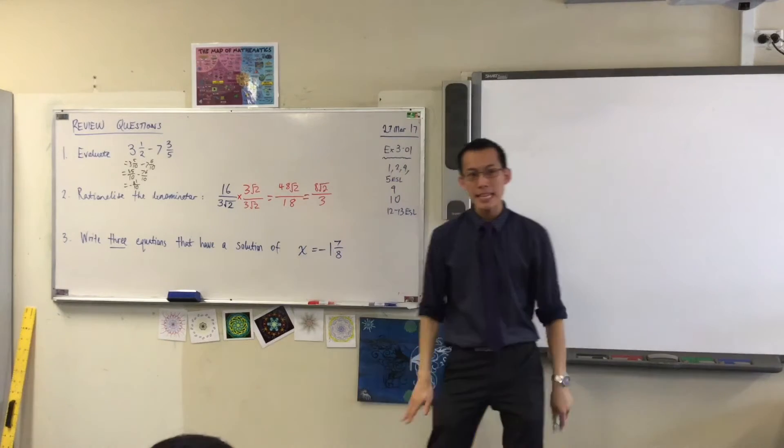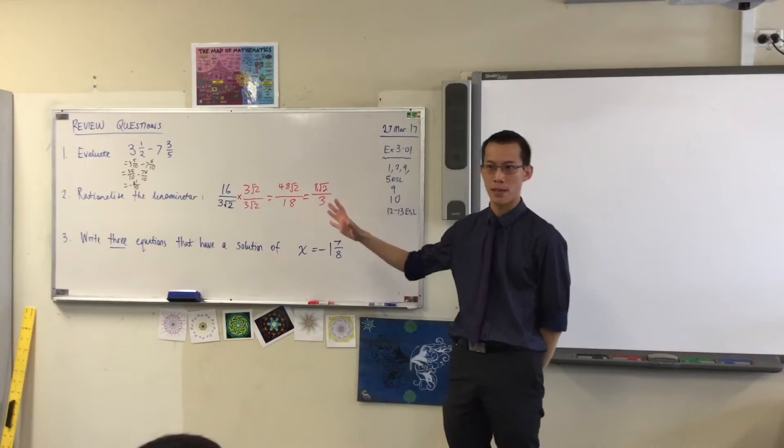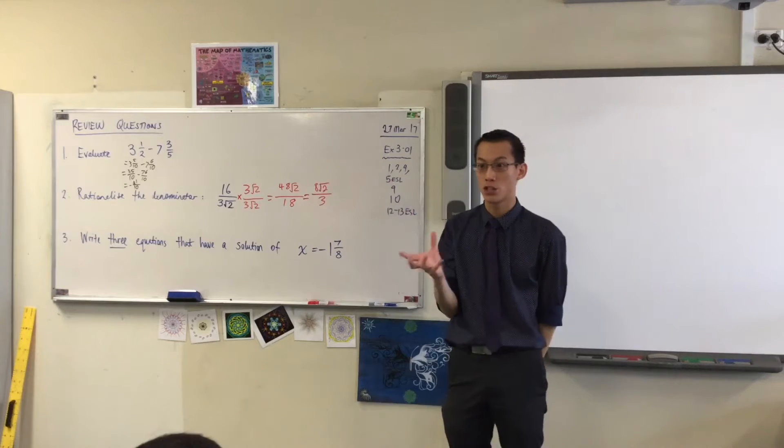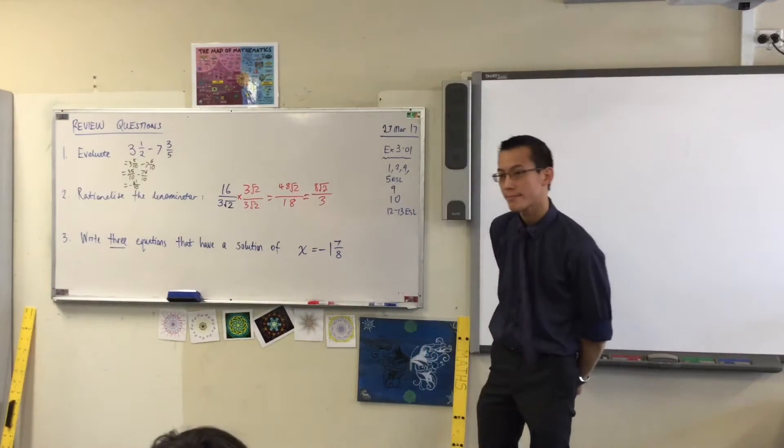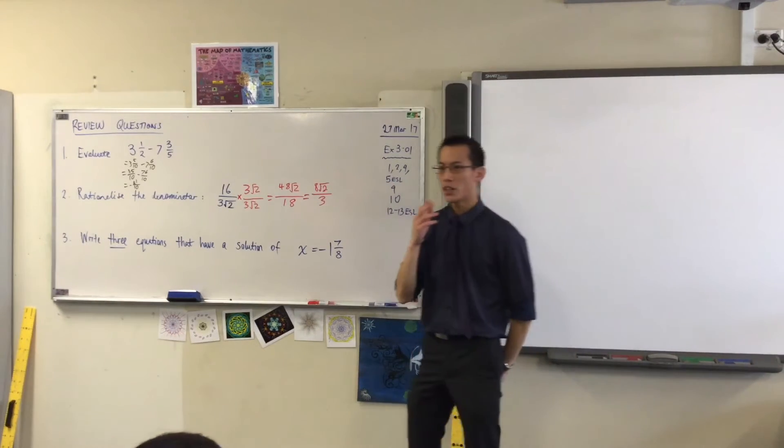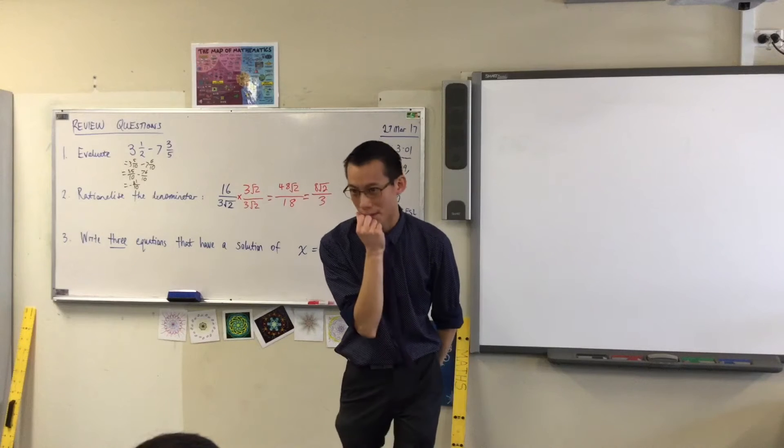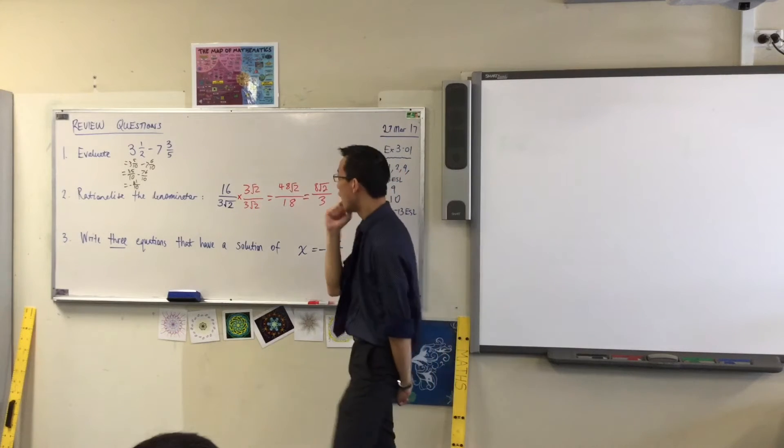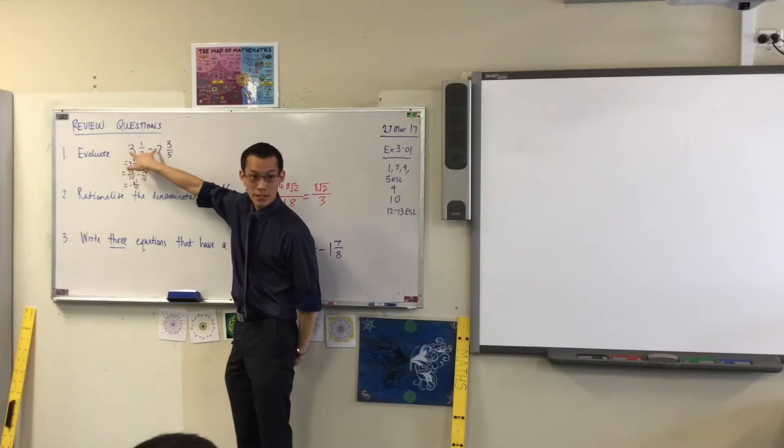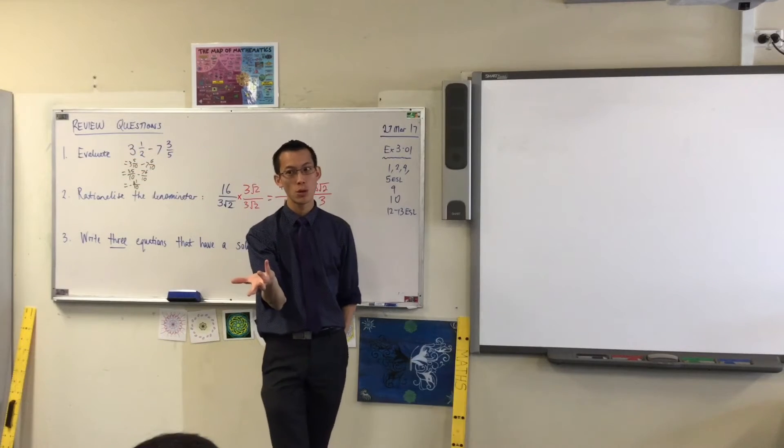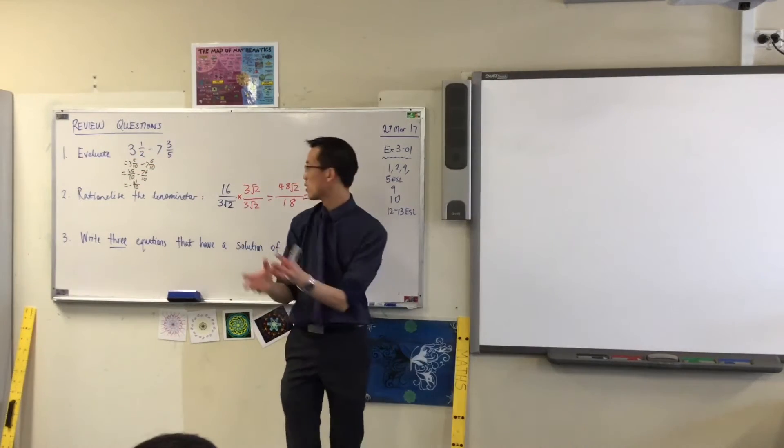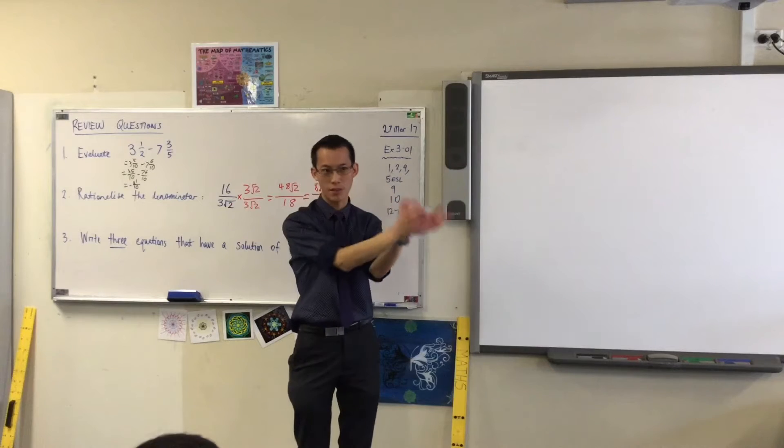Before we move on, is there anything else you could have done apart from that? I'm not saying it's wrong, but did anyone do something different? Take away the front number. What do you mean by take away the front number? 3 minus 7. Okay, so you could have done 3 take away 7, which would give you negative 4. And then you're like, well, I've dealt with the whole numbers now. Now I'll deal with the fractions.